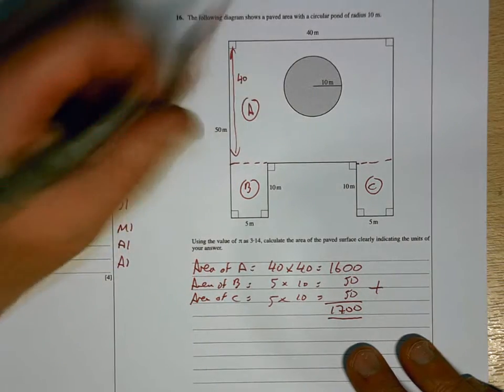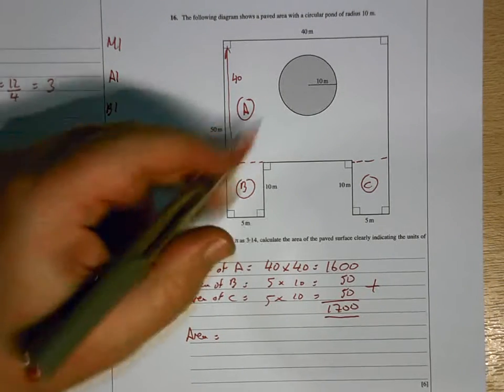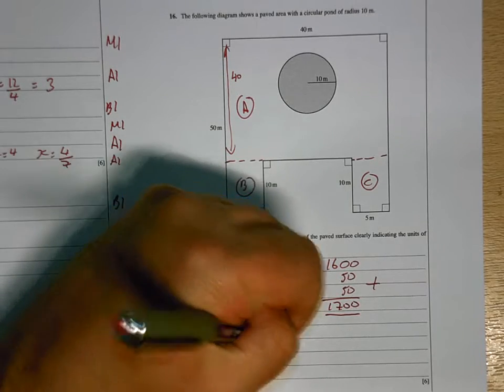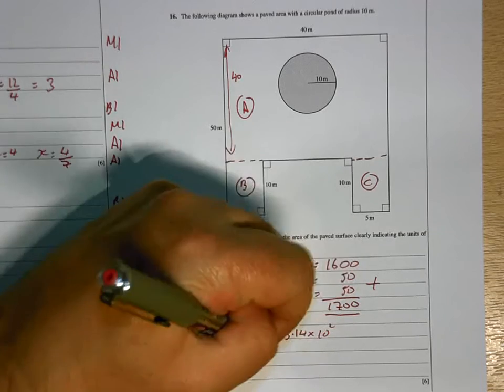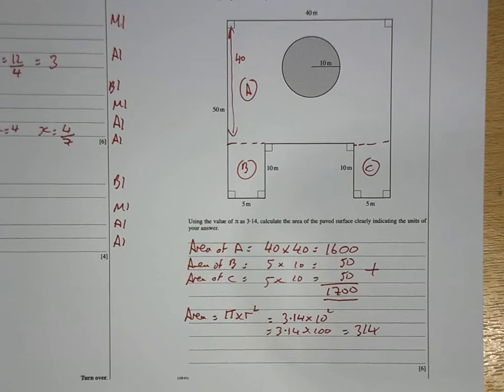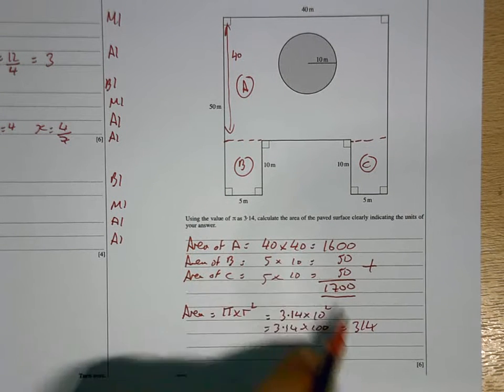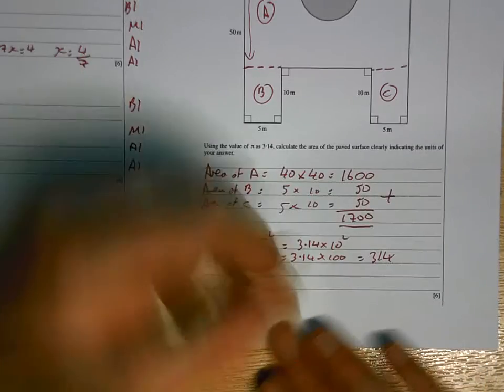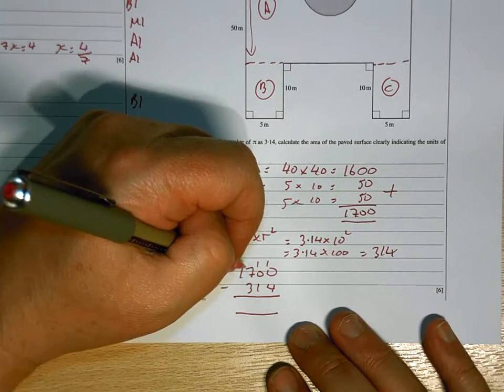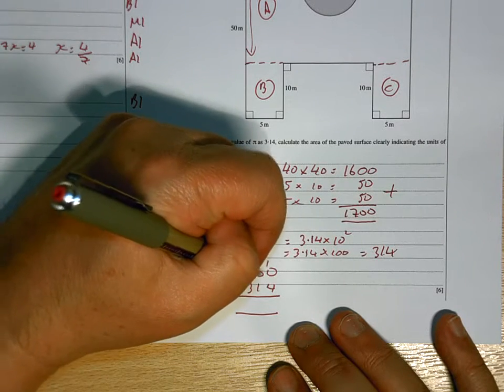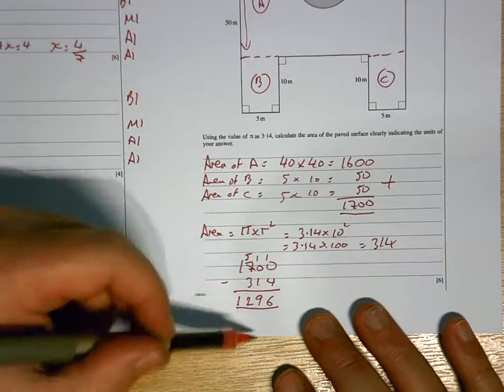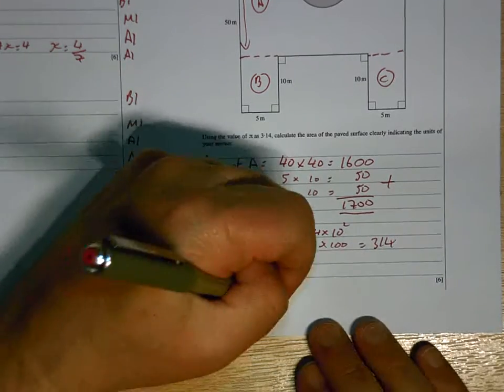But, we've got this circle to deal with. So, the area of the circle is going to be pi times r squared. and they're saying to use pi of 3.14 times 10 squared which means 3.14 times 100 which is 314. So, the surface paved surface is going to be 1700 take away 314. So, we've got to borrow from there twice 6, 9, 2, 1, meters squared.